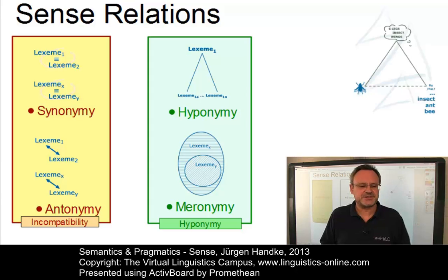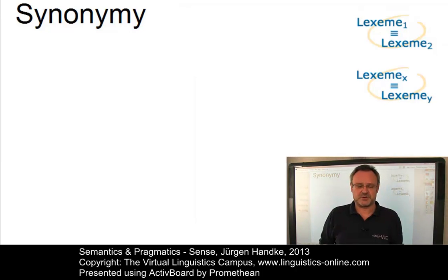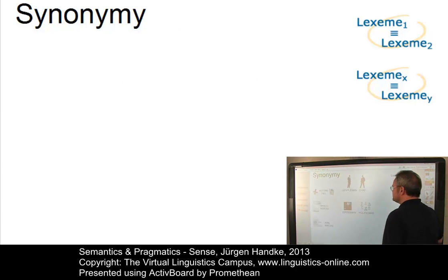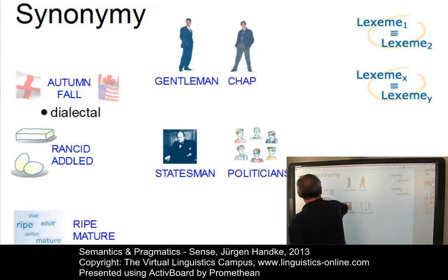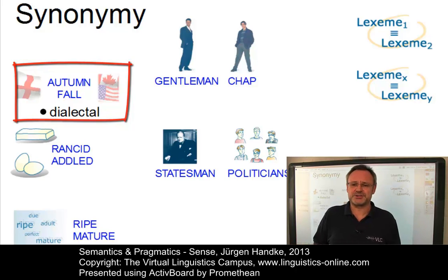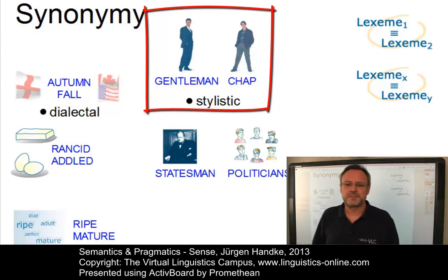Let's now look at these sense relations in detail, starting with synonymy. Synonymy is traditionally defined as sameness of meaning. It can, however, be maintained that no two words or lexemes have exactly the same meaning — it would seem unlikely that two such elements would survive in a language. There are at least five dimensions according to which possible synonyms can differ. There are dialectal differences; the example here is autumn and fall — they both have the same semantic core, yet they are used in different varieties or dialects of English. We can also find stylistic differences, such as between gentleman and chap — they have the same semantic core, but their use depends on stylistic aspects.